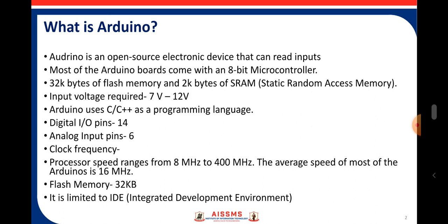What is Arduino? Arduino is an open source electronic device that can read inputs, and most Arduino boards come with an 8-bit microcontroller. It has 32 KB of flash memory. The input voltage required is 7V to 12V. The basic language used for Arduino is C and C++. It has 14 digital I/O pins and 6 analog input pins. The processor speed ranges from 8 MHz to 400 MHz, with the average being 16 MHz.